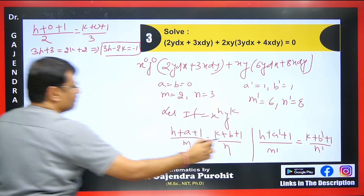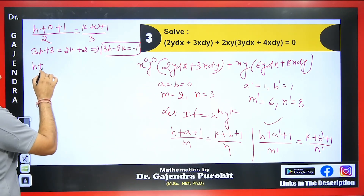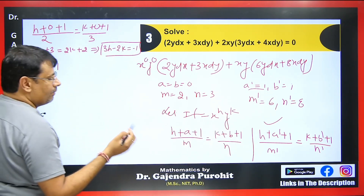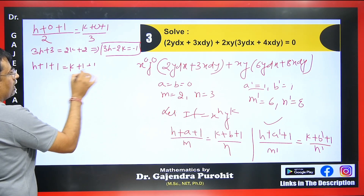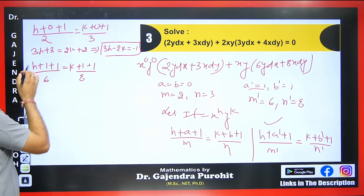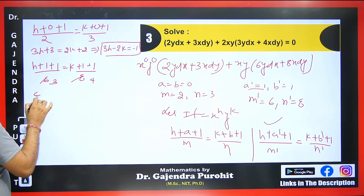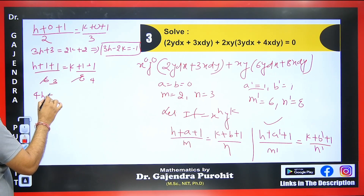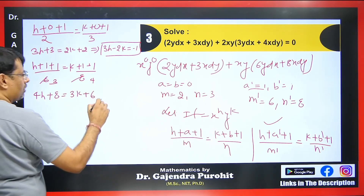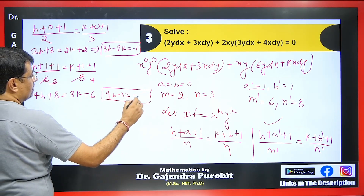For the second equation we use (h + a' + 1) / m' = (k + b' + 1) / n'. With a' = 1, b' = 1, m' = 6, n' = 8, this gives (h + 2) / 6 = (k + 2) / 8. Simplifying — cancelling and cross-multiplying — we get 4h + 8 = 3k + 6, which simplifies to 4h − 3k = −2. That is our second equation.